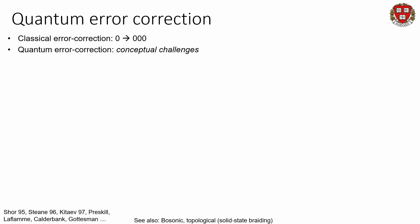Classical error correction utilizes a simple concept: you can just copy information. You might take a bit zero that you want to protect and copy it three times. Now if one of the bits fails, you can detect that it failed by measuring all of the bits, doing majority voting, and then returning back to your original state. But quantum error correction comes with a whole variety of conceptual challenges.